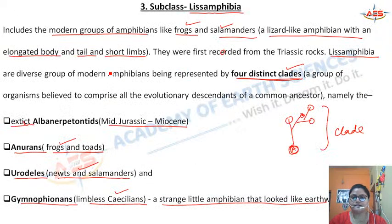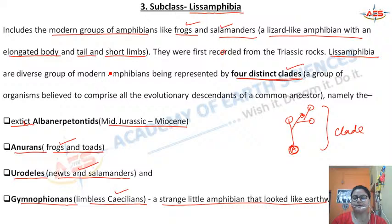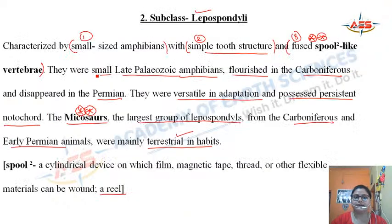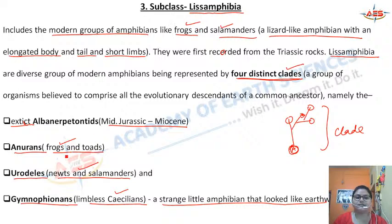We have seen the three subclasses of amphibia: the Labyrinthodontia, the Lepospondyli, and the Lissamphibia. The Labyrinthodontia has the labyrinthodont type of dentition pattern. The Lepospondyli are characterized by spool-shaped vertebrae, with example Microsaurus — the largest group. The Lissamphibia are the modern amphibians consisting of frogs, toads, salamanders, newts, and caecilians — strange little amphibians that look like earthworms.